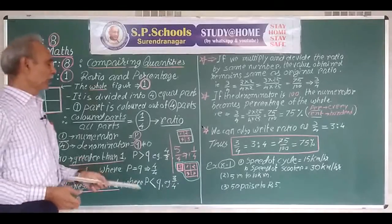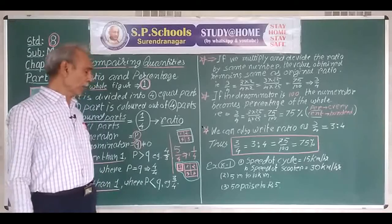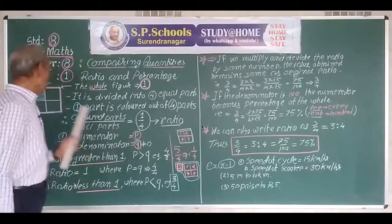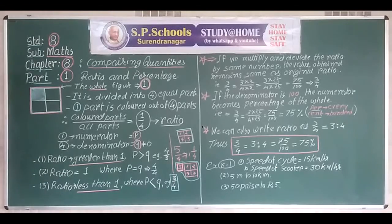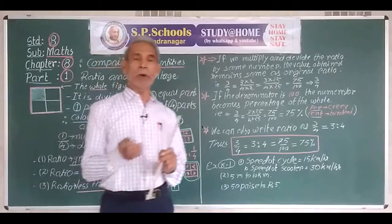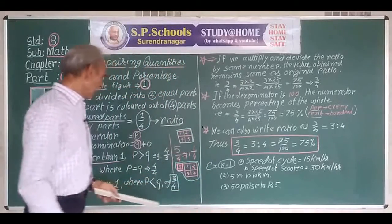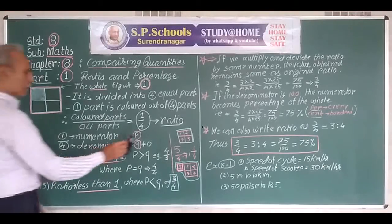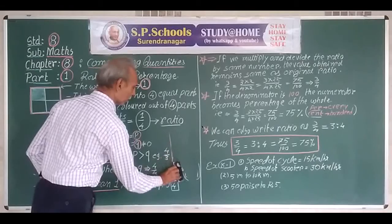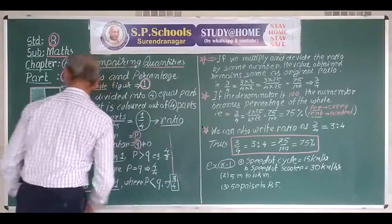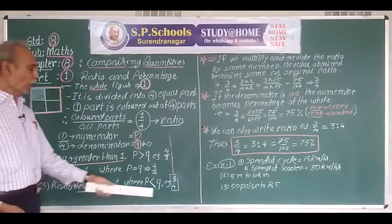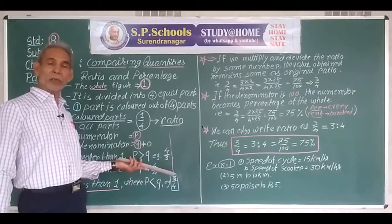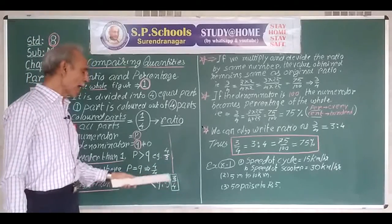Ratio less than one: when the numerator is less than the denominator, the ratio is less than one. For example, three upon four — out of four parts, if we take three parts, we have taken three upon four of the whole. Thus ratios are of three types. One part is divided equal to denominator times and out of that, the numerator times parts are taken.